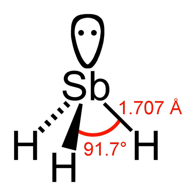Stibine is used in the semiconductor industry to dope silicon with small quantities of antimony via the process of chemical vapor deposition (CVD). It has also been used as a silicon dopant in epitaxial layers. Reports claim the use of antimony trihydride as a fumigant, but its instability and awkward preparation contrast with the more conventional fumigant phosphine.